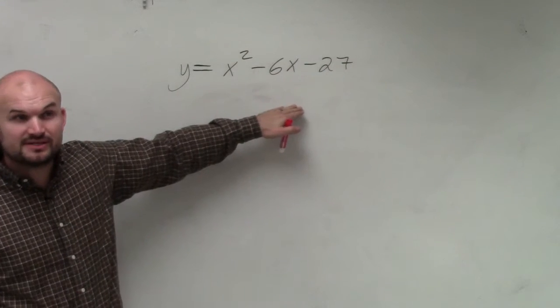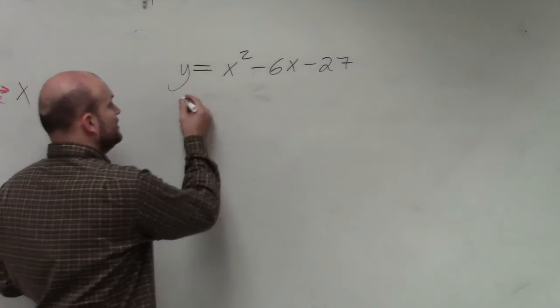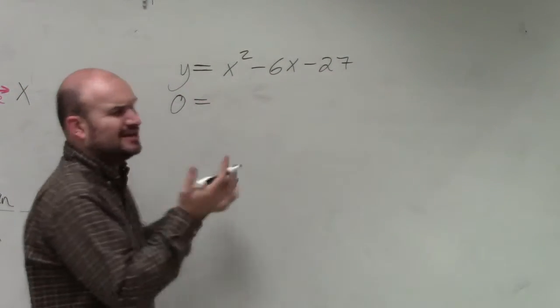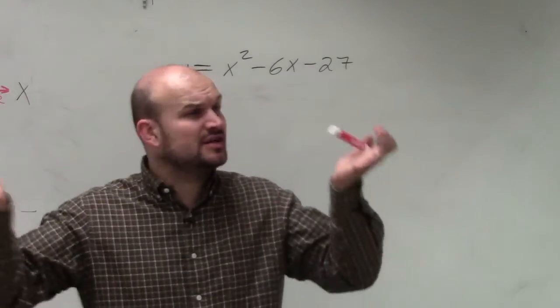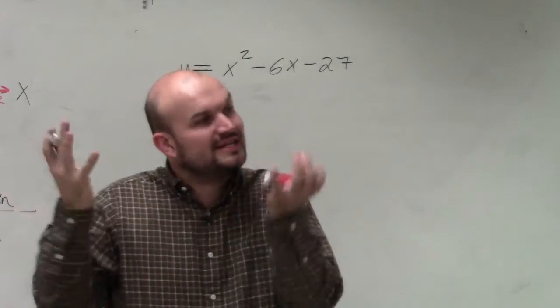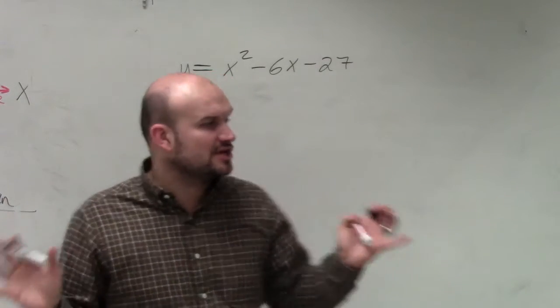So first thing, let's go through the steps we discussed in class. First thing is always set your quadratic equal to 0. A lot of you had trouble on the last test because we had numbers on both sides. Remember, the first thing I always said is get everything set equal to 0, then start solving.